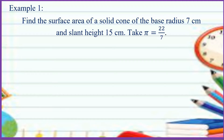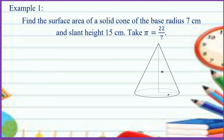Now let us have example number 1. Find the surface area of a solid cone with base radius 7 cm and slant height 15 cm. Take pi is equal to 22 over 7. So our slant height is equal to 15 cm and radius is equal to 7 cm.